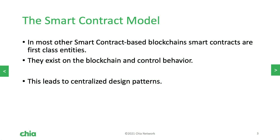In order to understand what Chia does differently, firstly we must look at what everybody else is doing. The smart contract model is the standard for most blockchains. On these blockchains, smart contracts exist as primary entities that you can interact with. You send a transaction to a smart contract and your transaction will contain some data. The smart contract will have some state and some programmed functions, and it will receive your transaction — cranks will turn internally, change some stuff, maybe you'll get some data back. That's fundamentally how it works. Smart contracts are these first-class entities, but this leads to centralized design patterns.